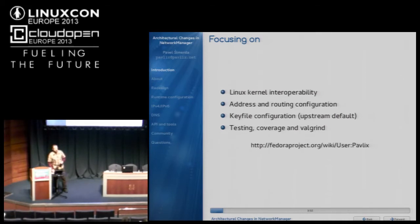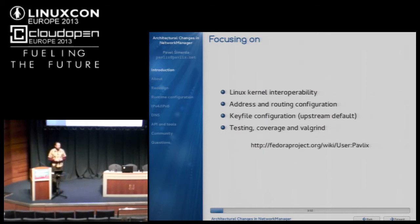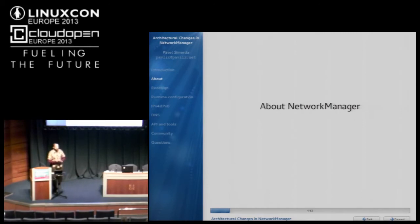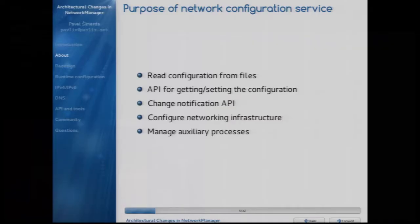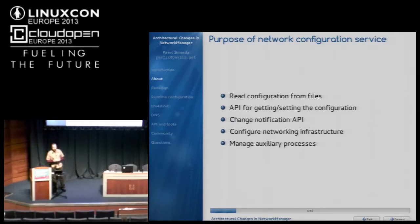I'm also very much focused on address and routing configuration, which is closely related to what the kernel does. I've also done work on the key file configuration, which is the native NetworkManager configuration format. We have a couple of other formats supported, such as Red Hat's ifcfg files, and I've done some work on testing as well. Very briefly about NetworkManager: there are a couple of points I would expect for a network configuration service to achieve.